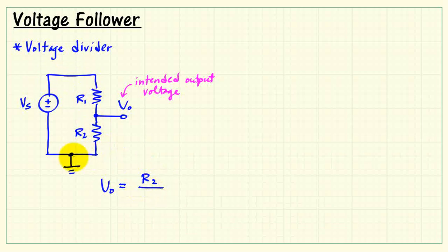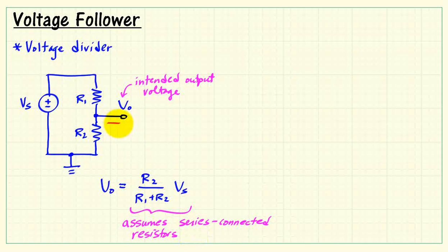The voltage divider equation tells us that Vo would be R2 divided by R1 plus R2 times Vs. Now, the underlying assumption for this equation is that the resistors are series connected. That means you cannot have any current leaving that series connection.